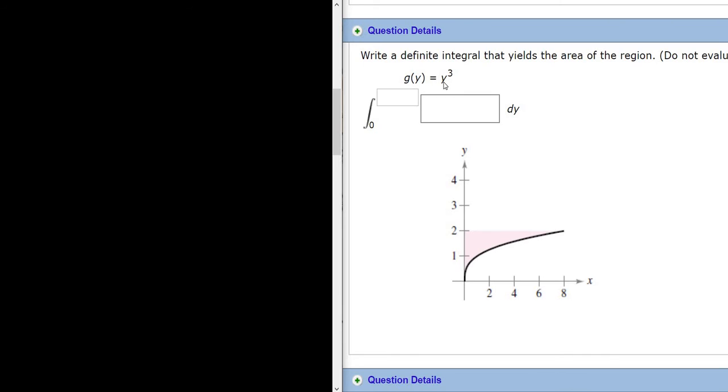Here it says g of y equals y cubed. So this is a function of y. Just for extra life knowledge, you can think of it as x equals g of y. So it's really x equals y cubed. And this is useful later in other classes like calculus 2.